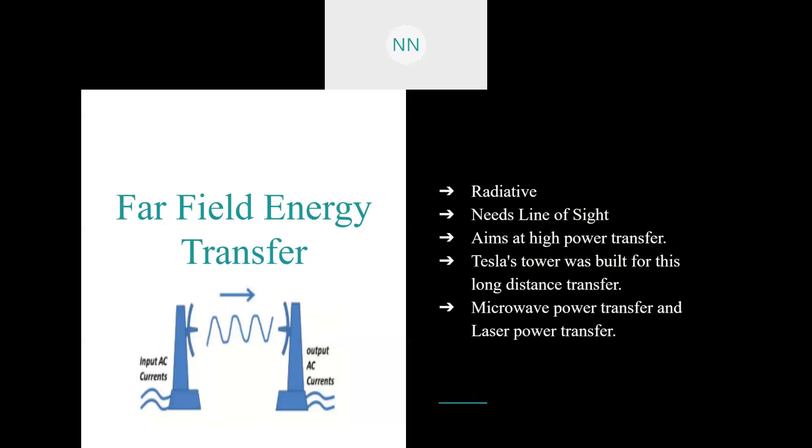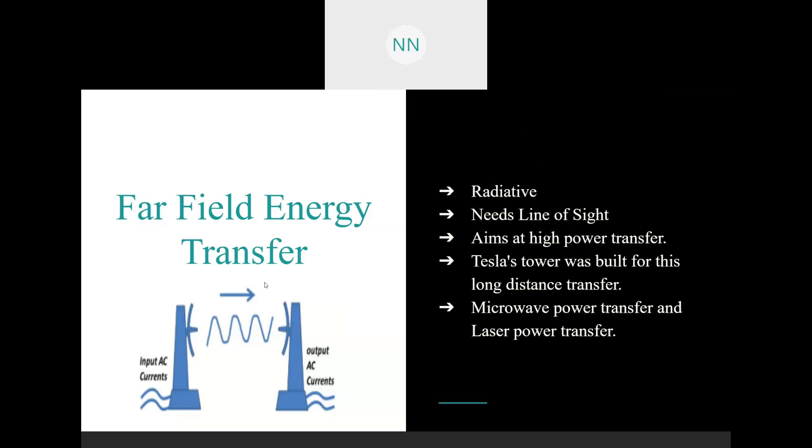Next, we can move to far field energy transfer. Far field energy transfer is based on electromagnetic waves, which is radiative. Usually, radio waves or microwaves are used and even light waves are used because of the wavelength. There should be a line of sight for far field energy transfer. As shown in this figure, there are two antennas and the radiation propagated from one antenna should be made sure to fall directly upon the receiving antenna, so they should be kept in line of sight. This mode of transfer aims in high power transfer and this was what Tesla's idea was all about, that is long distance transfer. They are mainly of two types: microwave power transfer and laser power transfer.